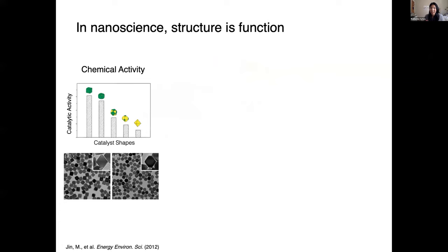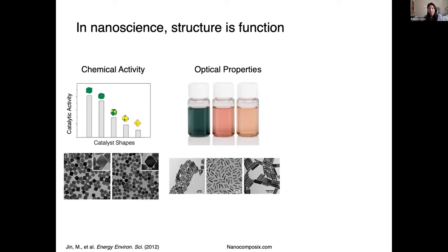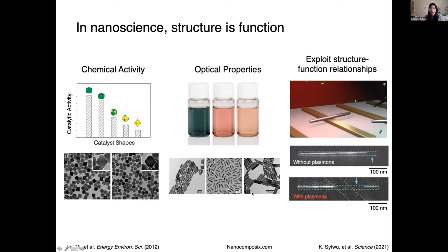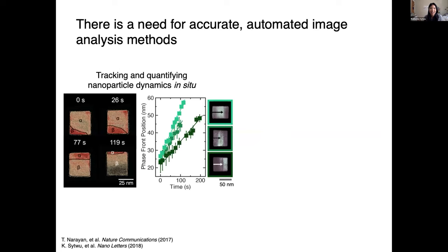At the nanoscale, structure generally dictates function. We can see this in chemical applications — like catalysts whose catalytic activity depends on nanoparticle shape — and also for optical properties. Here we have gold nanorods with different aspect ratios that macroscopically show up as different colors, meaning their optical properties are dependent on nanoparticle structure. My PhD was really focused on uncovering these structure-function relationships using in situ TEM. Once we understand these relationships, we can exploit them to discover new behavior and start controlling things, like initiating activity at sites where it normally doesn't happen.